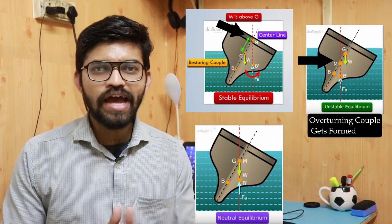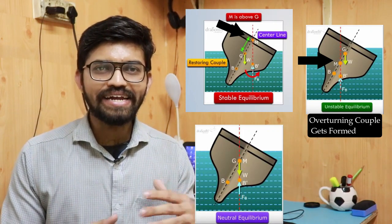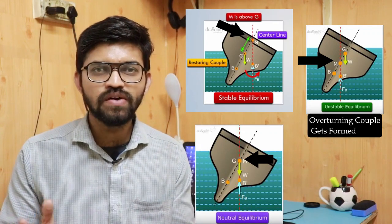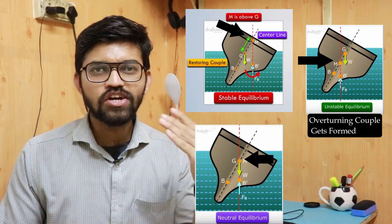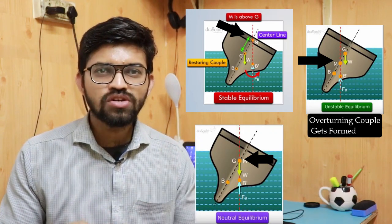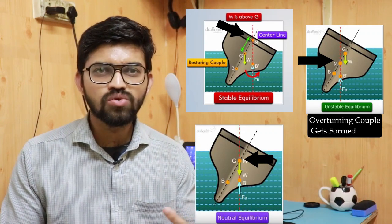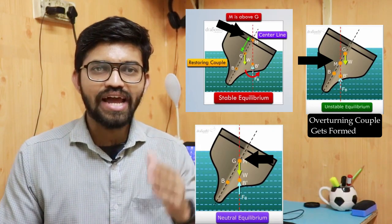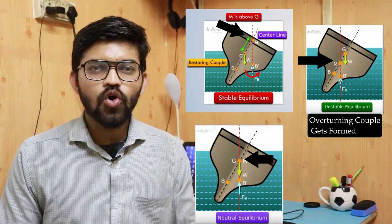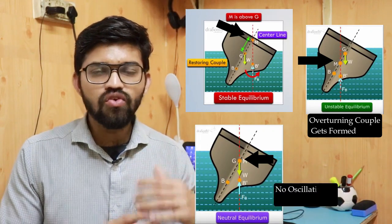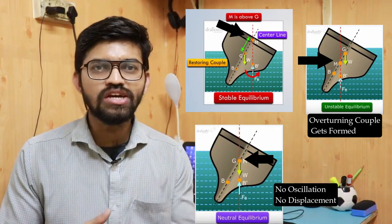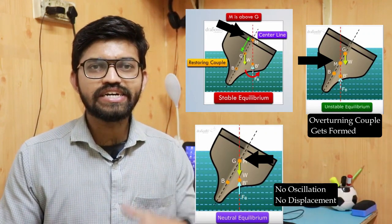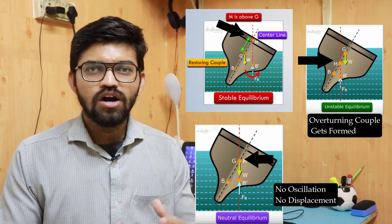In the third scenario — neutral equilibrium — the center of gravity and the metacenter coincide with each other. The line of action of the buoyancy force and the weight of the body are collinear, meaning they are in a straight line. In this scenario, there will be no further displacement and no oscillations. These are the three categories based on where the metacenter lies.